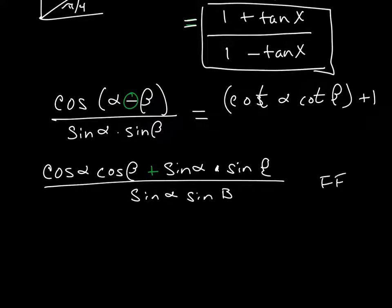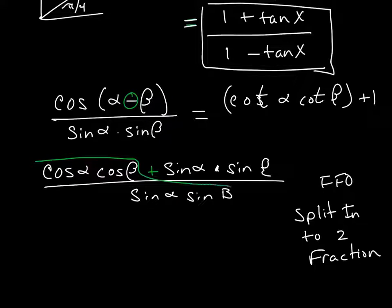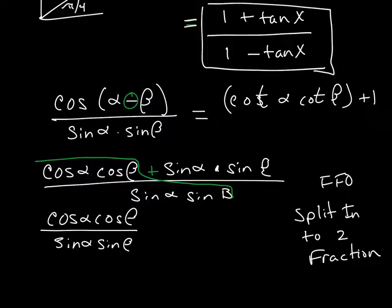Now, this is one of your fraction face-off pieces. So, what we want to do is we want to split this into two fractions. So, what I'm going to do here with that first fraction, remember, it's just this piece all over here. So, that gives me cosine alpha, cosine beta, all over sine alpha, sine beta.